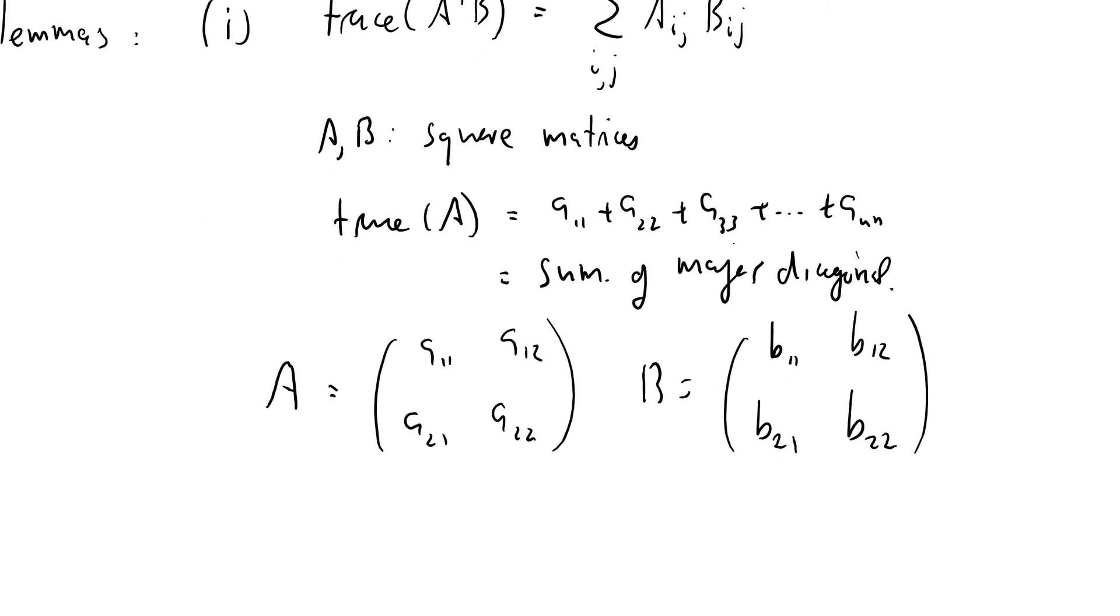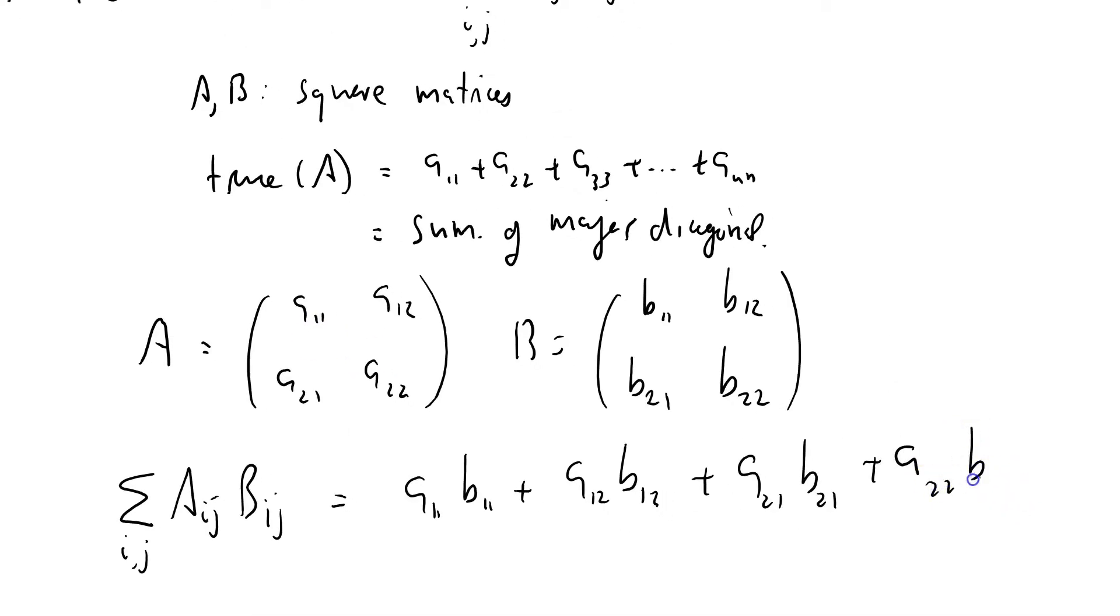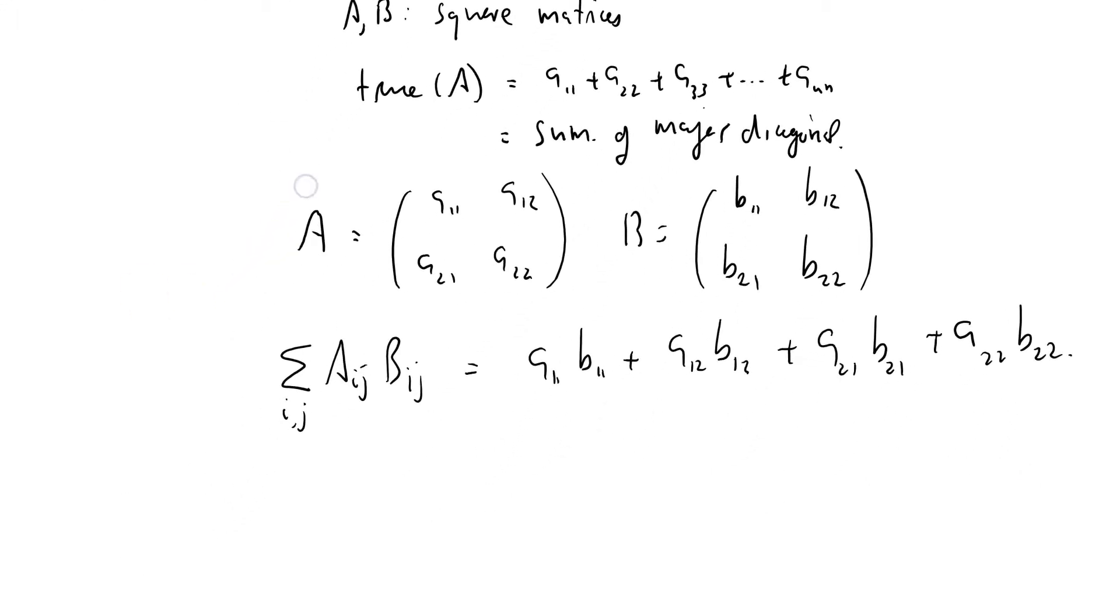Then, okay, and I'm going to look at sigma AijBij, and that's summed over i and j. And that's going to equal A11, B11 plus A12, B12 plus A21, B21 plus A22, B22. Notice there's no restriction on the form of A and B here, other than they are square matrices.